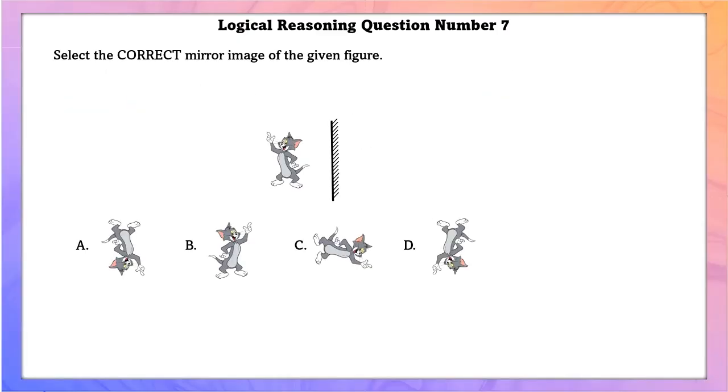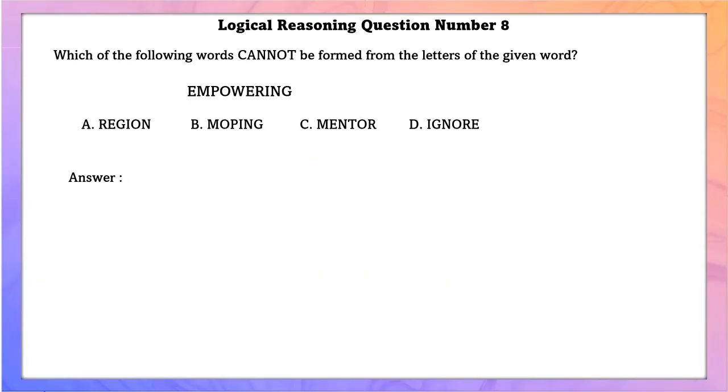Logical reasoning question number 7 — select the correct mirror image of the given figure. The correct mirror image is option B.